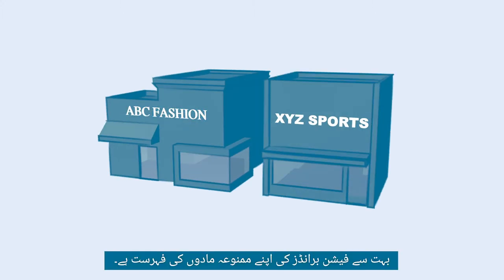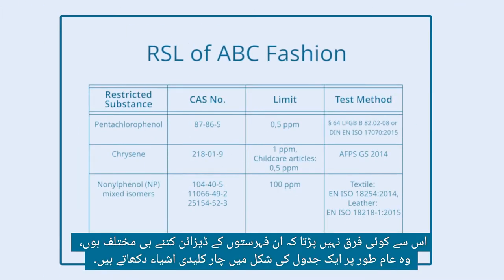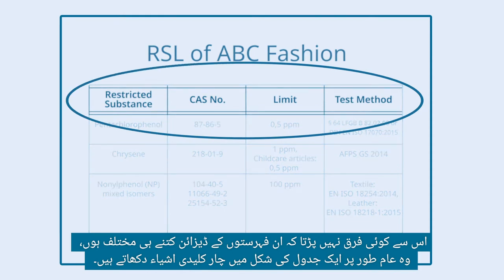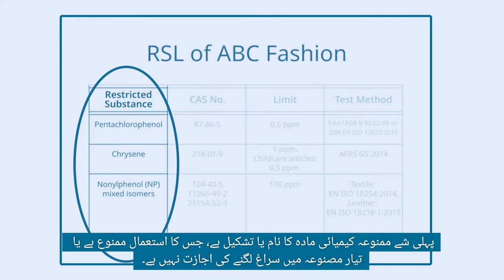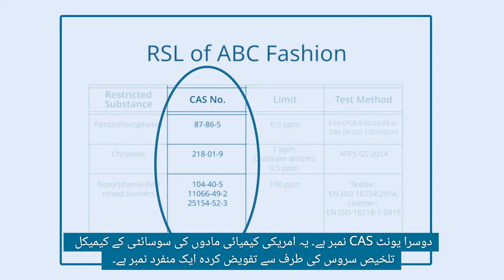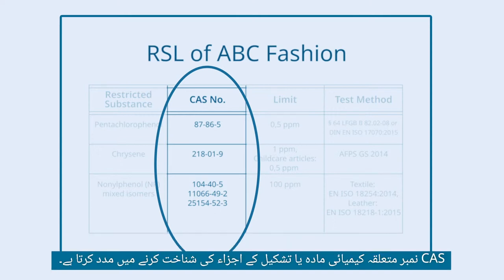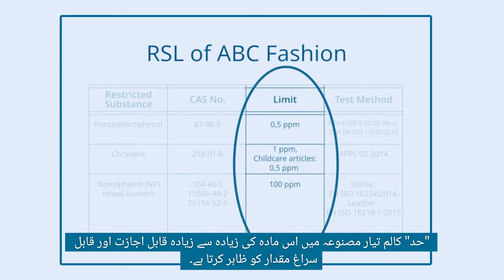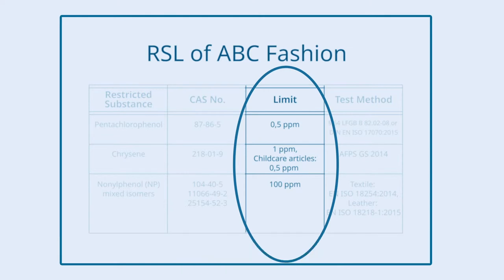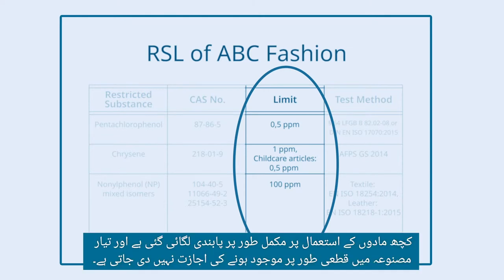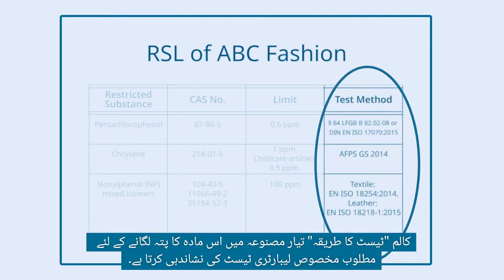Many fashion brands have their own Restricted Substance List. No matter how different the design of these lists is, they usually show four key items in a table format. The first item is the name of the restricted chemical substance or formulation. The second item is the CAS number — a unique number assigned by the Chemical Abstracts Service of the American Chemical Society — which helps identify the respective chemical substance or components of the formulation. The limit column shows the maximum allowable and detectable amount of that substance in the finished product; some substances are completely banned and are not allowed to be found at all. The Test Method column indicates the specific laboratory test required for detecting that substance in the end product.